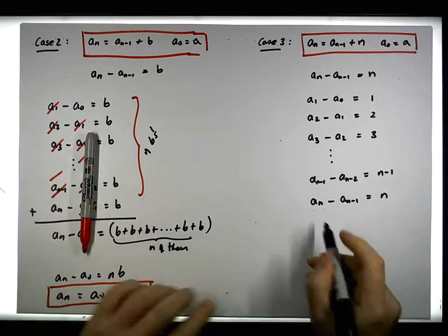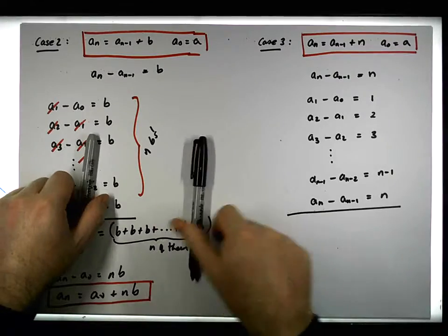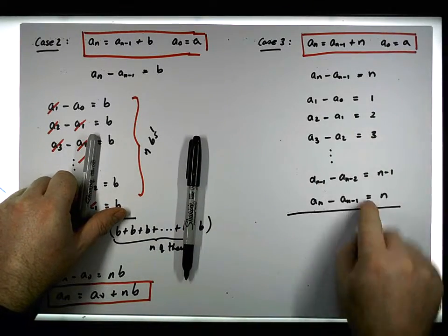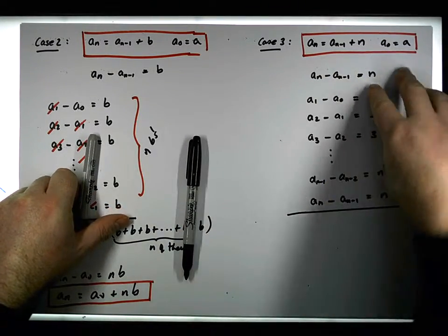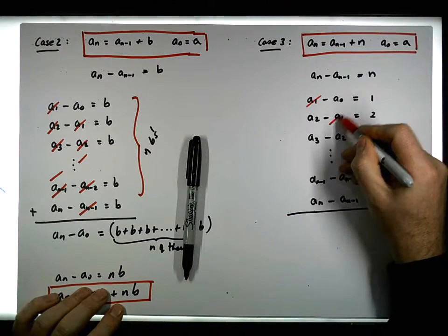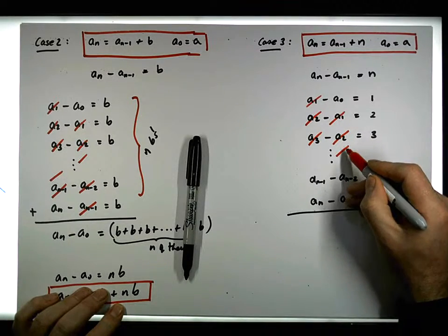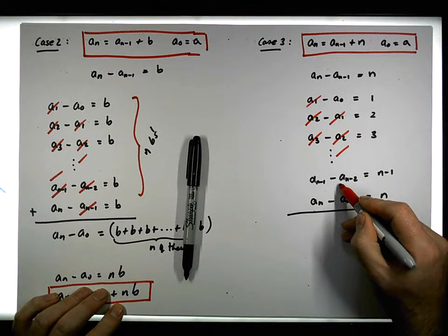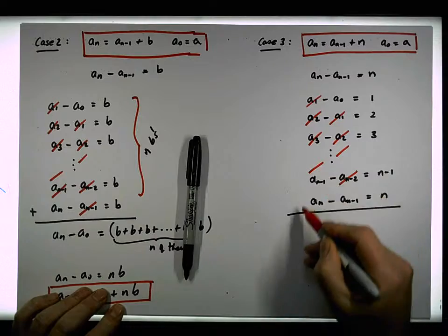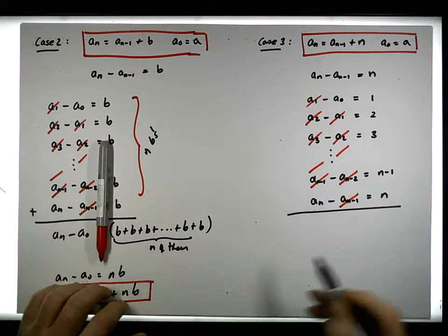So let's try the technique again. Let's add up the left-hand side and add up the right-hand side. Because if each one of these things are equal, the summation of the left must equal the summation of the right. And once again, you can see that the a_1 cancels with the minus a_1. The a_2 cancels with the minus a_2. The a_3 will cancel with the following term. The minus a_{n-2} will cancel with the previous one. The a_{n-1} will cancel with the a_{n-1}.